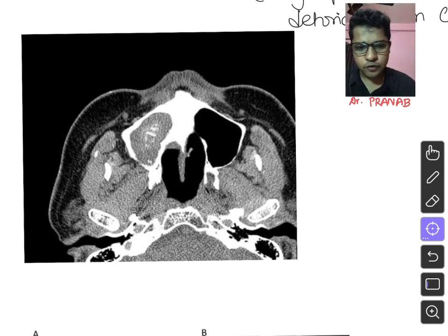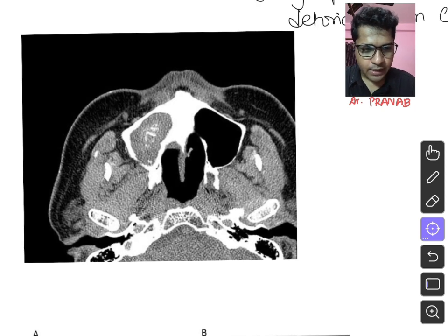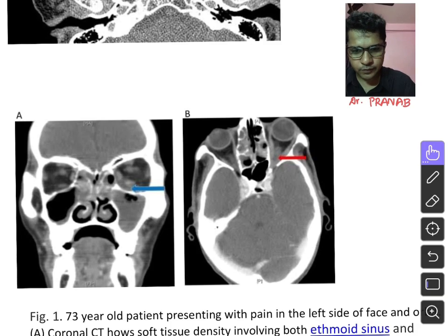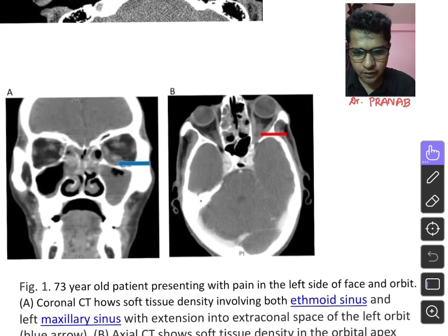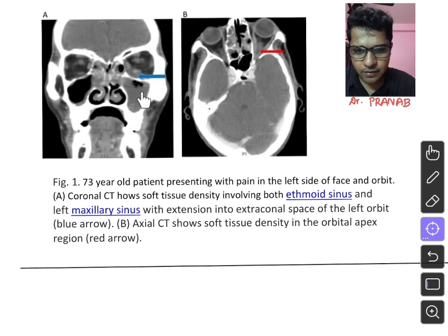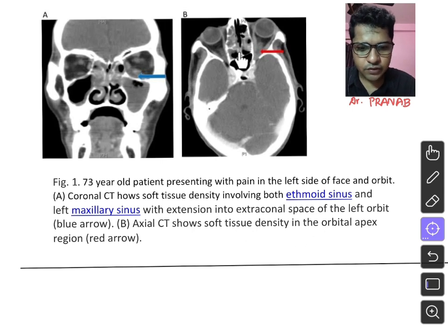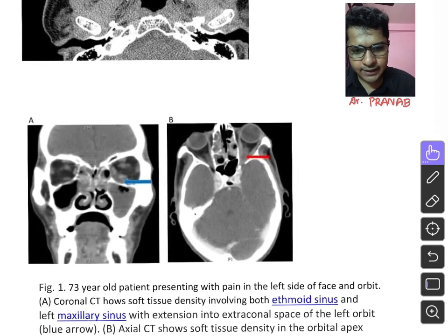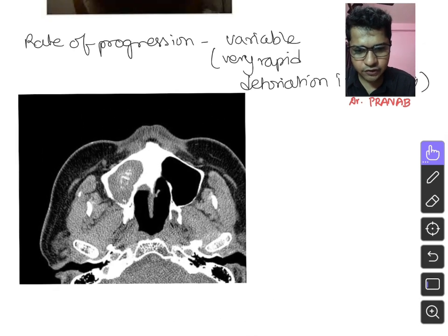You must be very cautious, especially during this COVID pandemic — for patients who received steroids or have long-standing diabetes, differentiate using clinical signs and imaging. Another image of rhinocerebral orbital mucormycosis shows a 73-year-old male with left facial and orbital pain. CT shows soft tissue density involving both ethmoid sinuses and the left maxillary sinus with extension into the extraconal space of the left orbit. Axial CT shows soft tissue density at the orbital apex, indicating fungal growth inside the orbit.